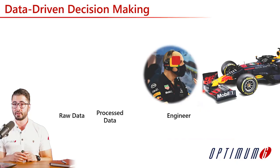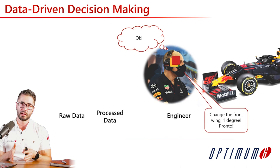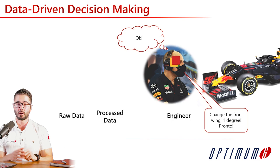Now with the data processed, we are not guessing — we are looking at the data. If we think it could be differential behavior, we look at the wheel speed difference between left and right. Or if we think it's aerodynamics, what is the downforce distribution for different sections of the circuit? Now we understand it is a downforce distribution problem, so we change one degree of the wing — a data-driven decision.